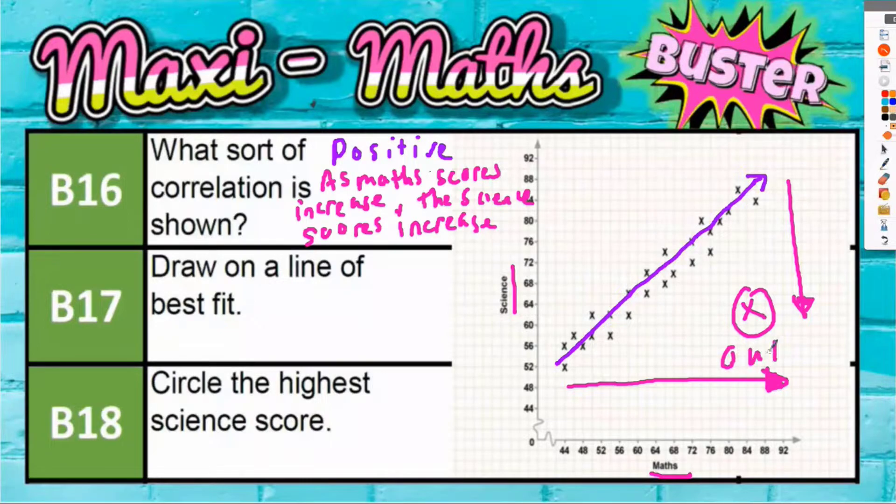So drawing a line of best fit, well my purple arrow here, I've already done that. A line of best fit just passes through the general direction of most of the crosses.